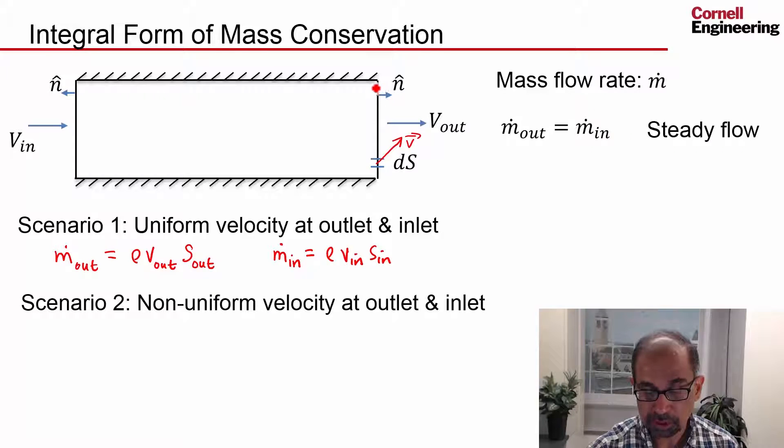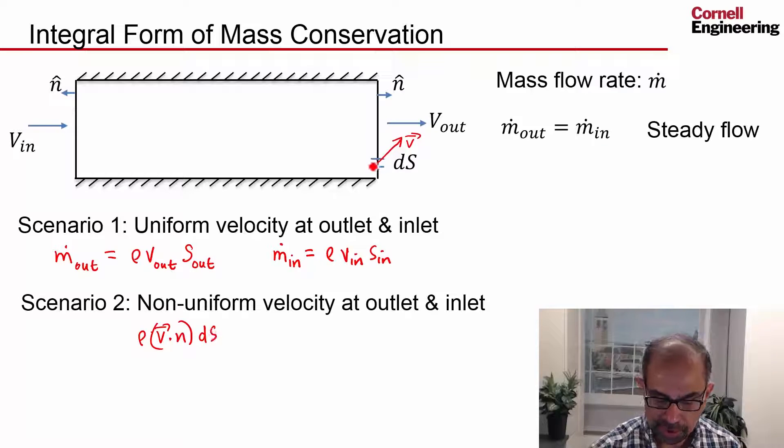I also define an outward normal at the surface like this. And then I can write out what is the mass flow rate going out through that tiny surface area ds. That's going to be ρ, now v dot n is going to give me the normal component, which is the only one that's going to affect the mass flow rate, times the surface area, which is ds. And then I have to add up the contributions for these differential elements throughout the outlet surface. And in the limit as ds tends to zero, that's an integral.